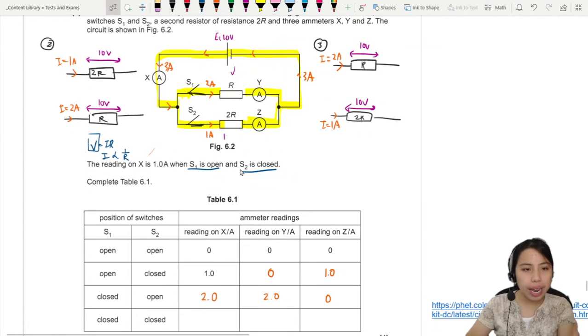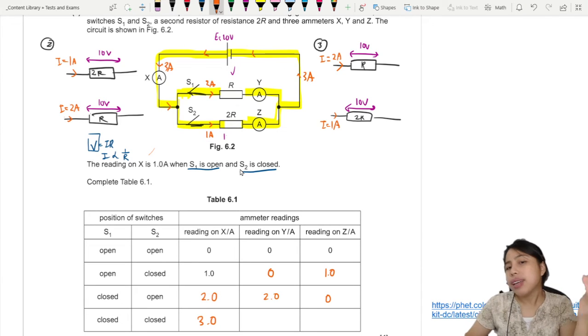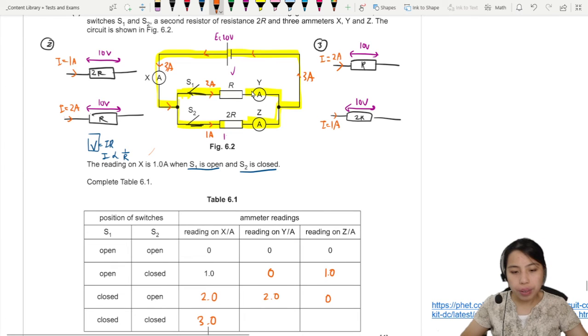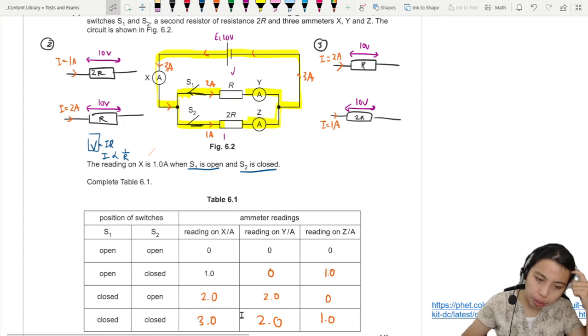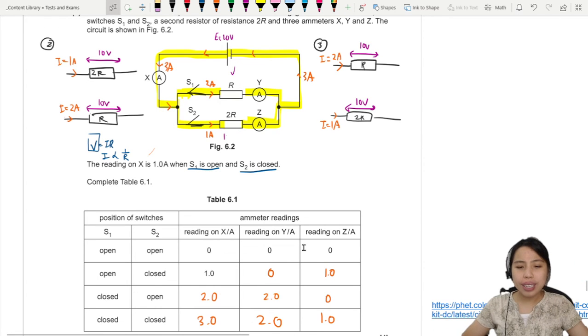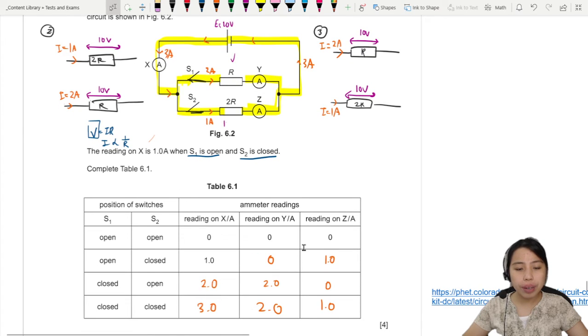So reading on X, we have 3 amps coming in. Y will take 2 amps for that path. And Z will have 1 amp. So 2 plus 1 should equal to 3. This is a tricky question. So that's how we can think of it.